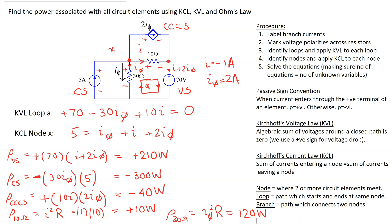Summing up all the powers in this circuit: 210 − 300 − 40 + 10 + 120 = 0. This means all the power generated in the circuit equals all the power absorbed by the different circuit elements, and this circuit therefore satisfies the power check.